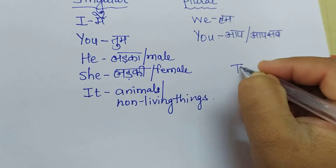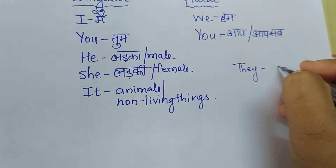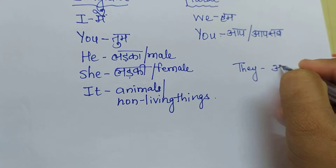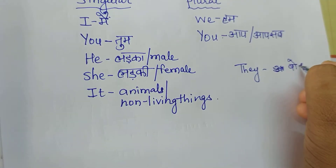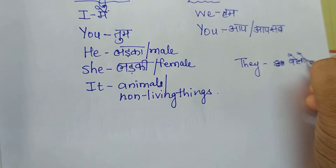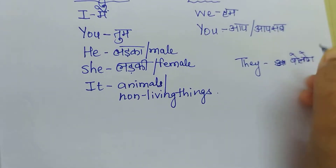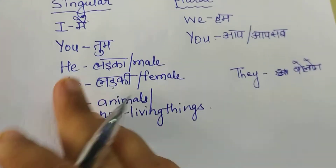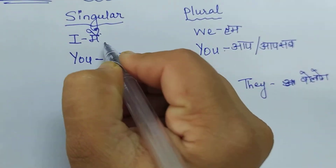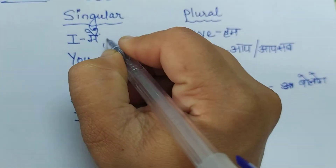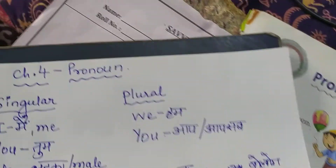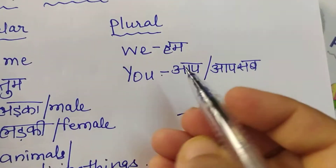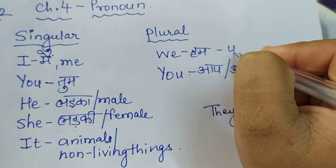And 'they.' They means they are people — a group of people. And when we talk about 'me,' then we can use 'them.'